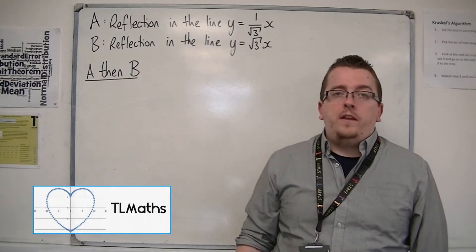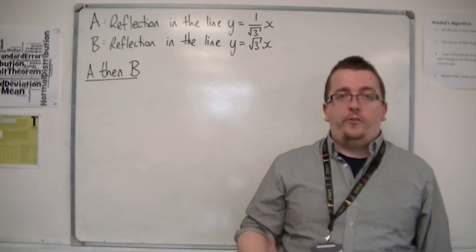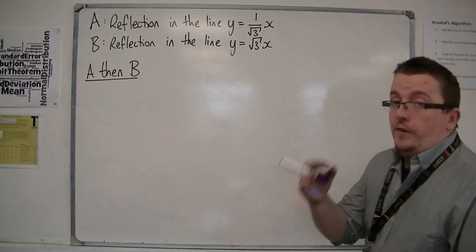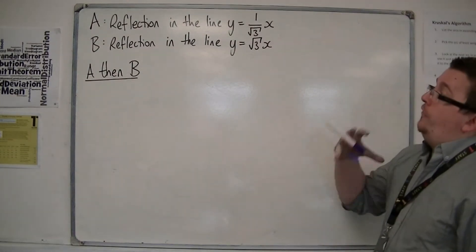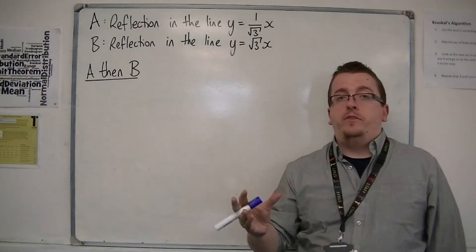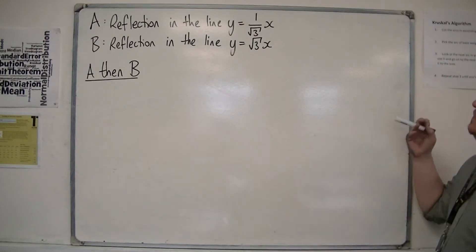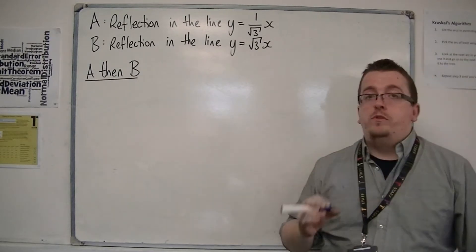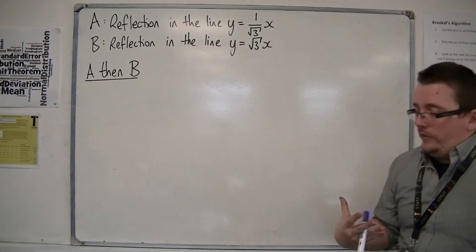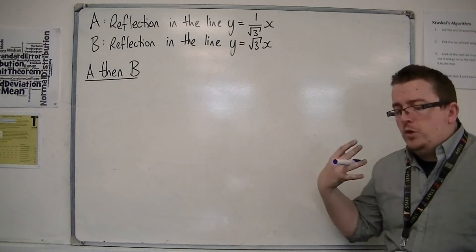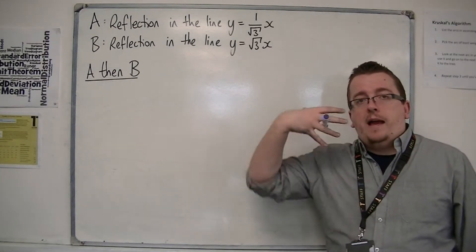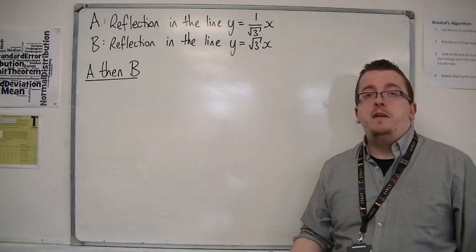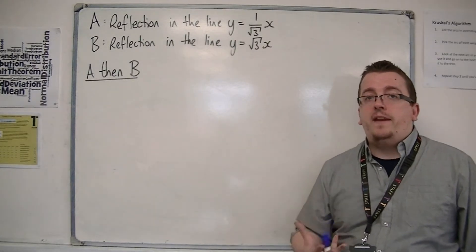Let's say that we have two transformations, transformation A and transformation B. The first transformation A is a reflection of the line y equals 1 over root 3x, and transformation B is a reflection of the line y equals root 3x. Now let's say then that I want to perform A, then B, and then describe what transformation that actually is.